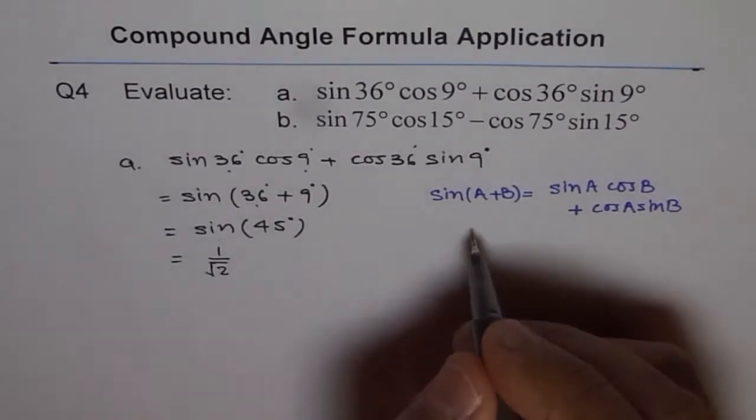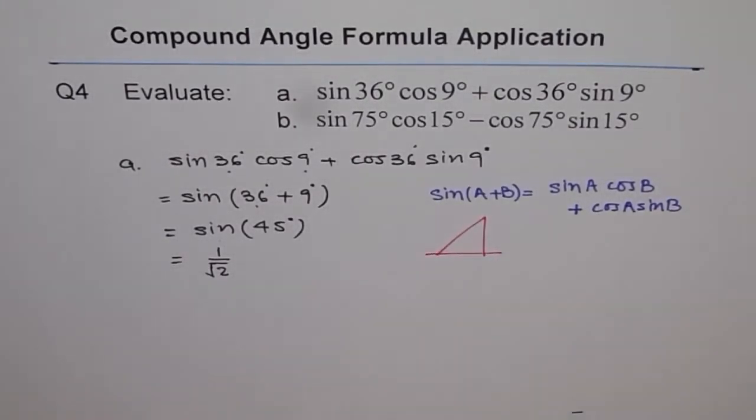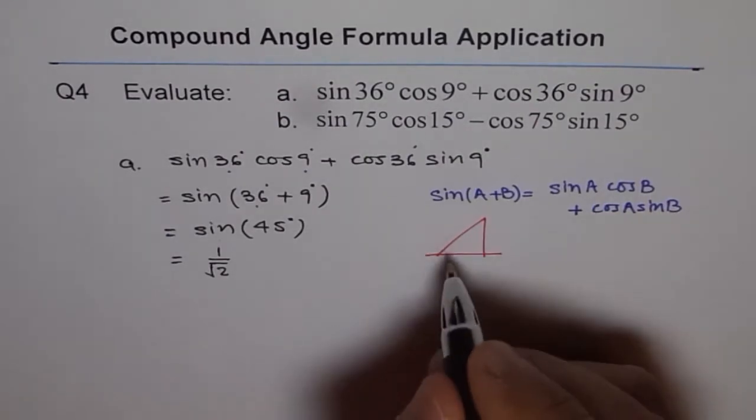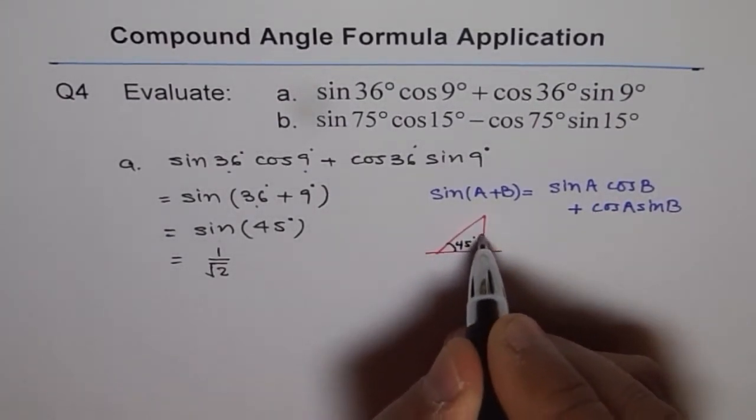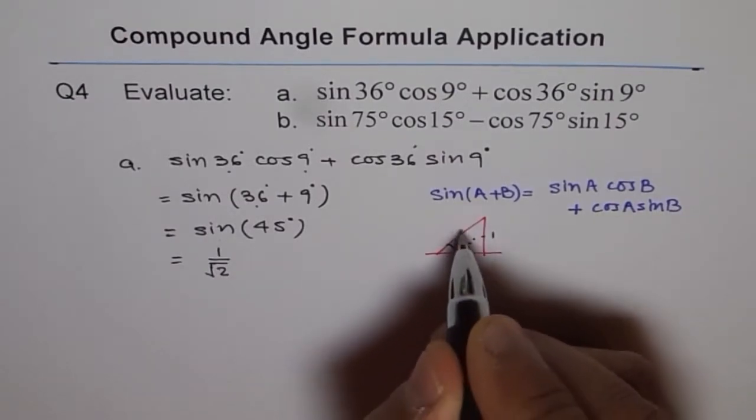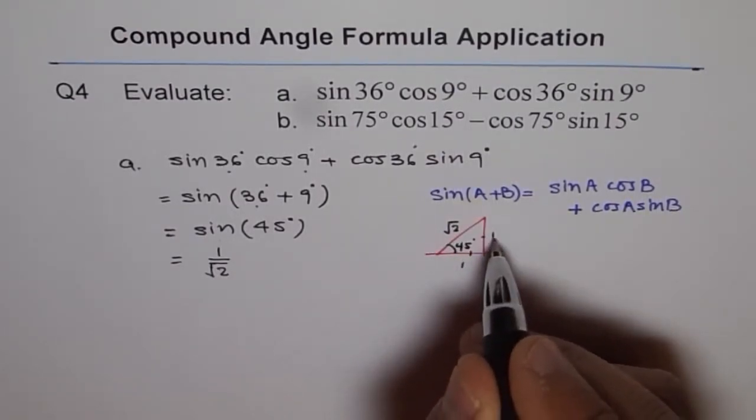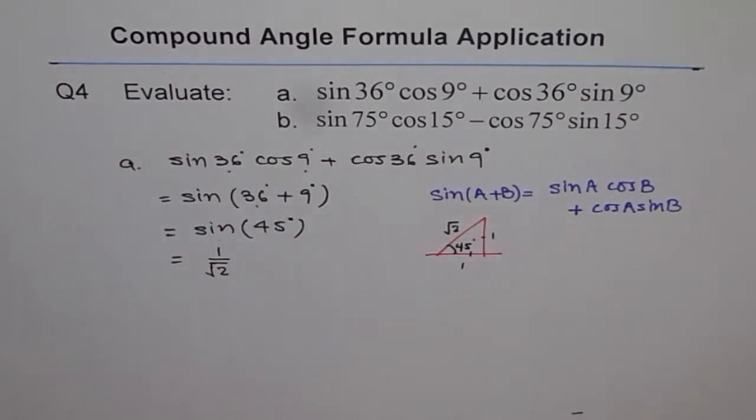And then I applied the special triangle of 45 degrees, and that is this triangle. And in this triangle, if this is 45 degrees, then these two sides are equal to 1, 1, square root 2, and you get sin of 45 as 1 over square root 2. And that's how you do these kinds of questions.